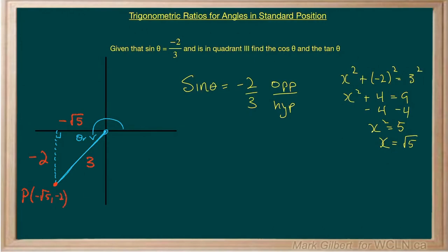But now we have all three sides of our triangle, and we can find the other ratios. The cosine of theta is the adjacent over the hypotenuse. So that's going to be negative root 5 over 3.